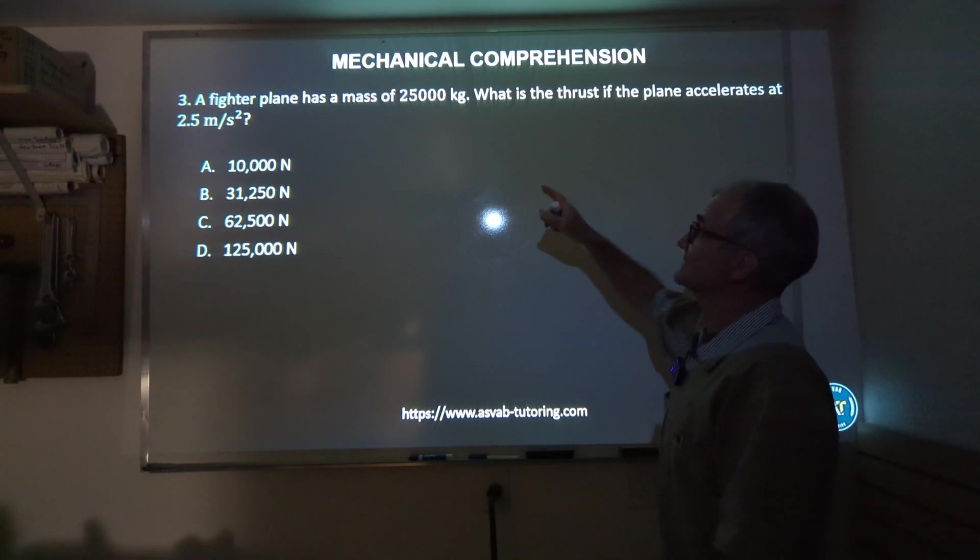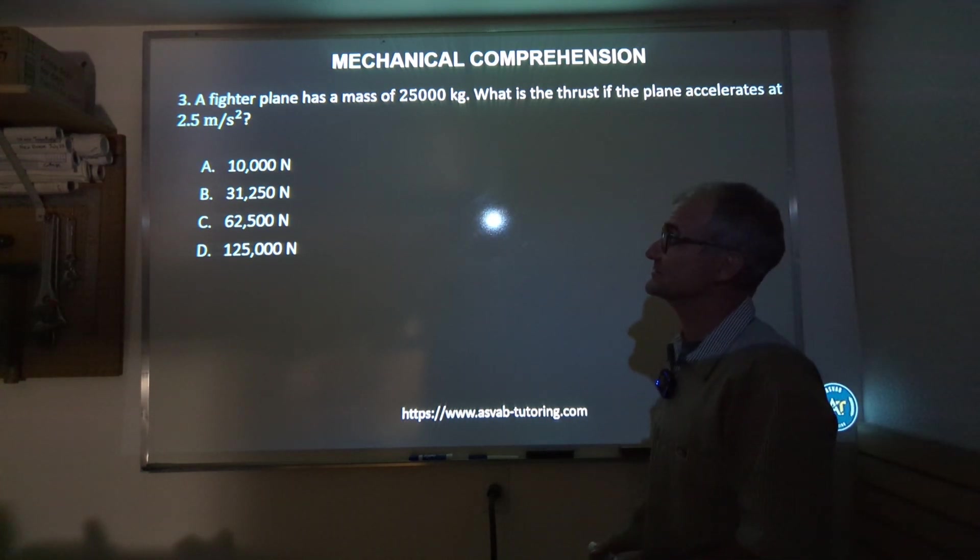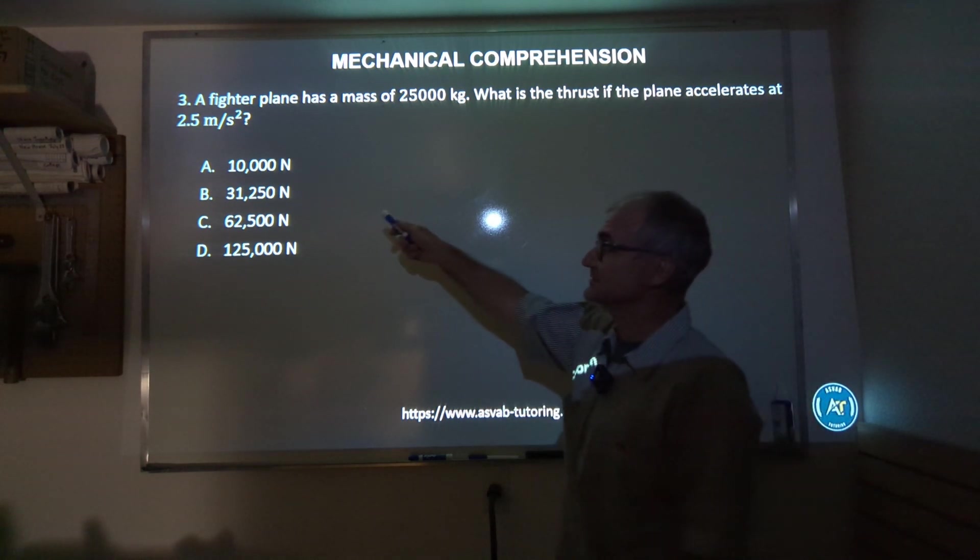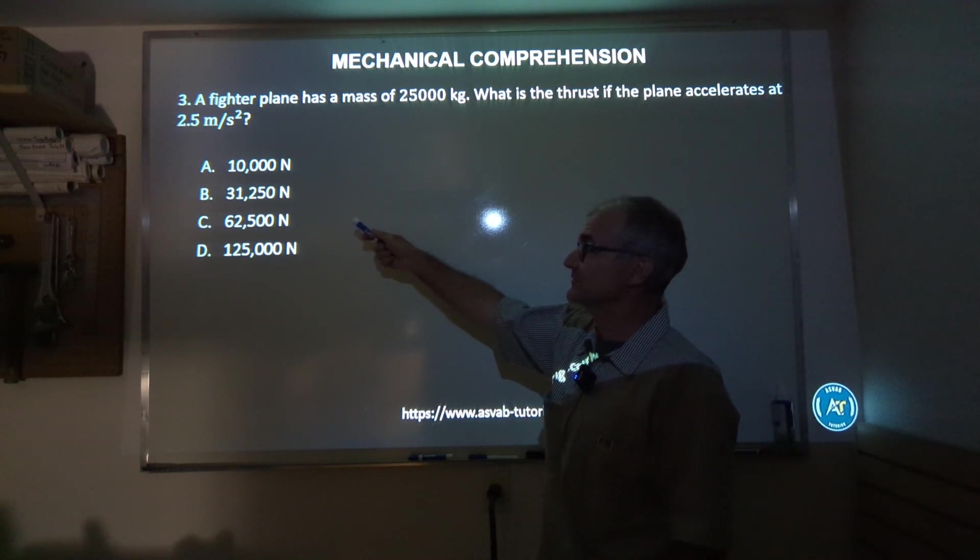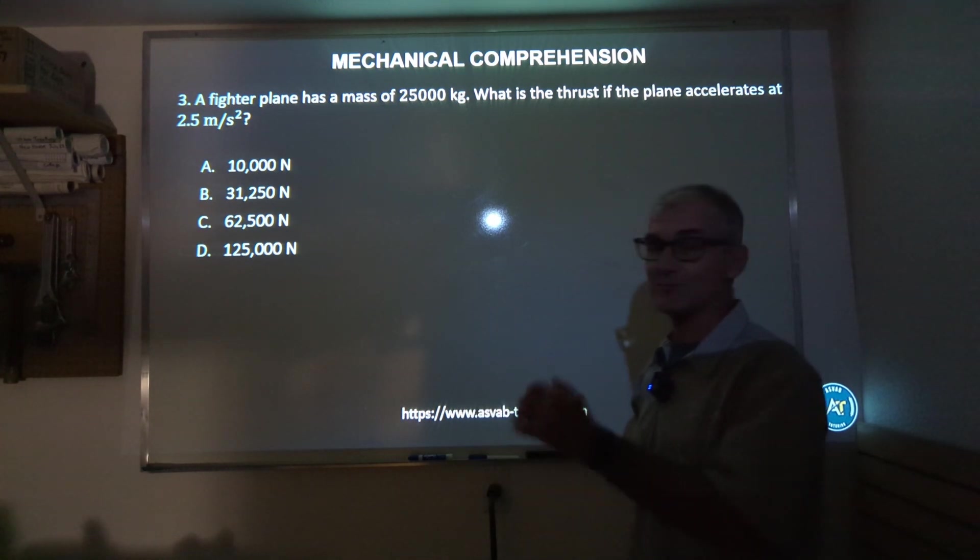Three, a fighter plane has a mass of 25,000 kilograms. What is the thrust of the plane if it accelerates at 2.5 meters per second squared? 10,000 newtons, 31,250 newtons, 62,000, or 125,000 newtons. Pause the video, figure it out, unpause, watch how I do it.